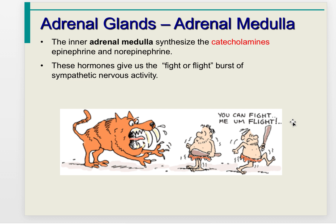The adrenal medulla produces catecholamines — norepinephrine and epinephrine — which are the fight-or-flight hormones, the same type as those in the sympathetic nervous system.